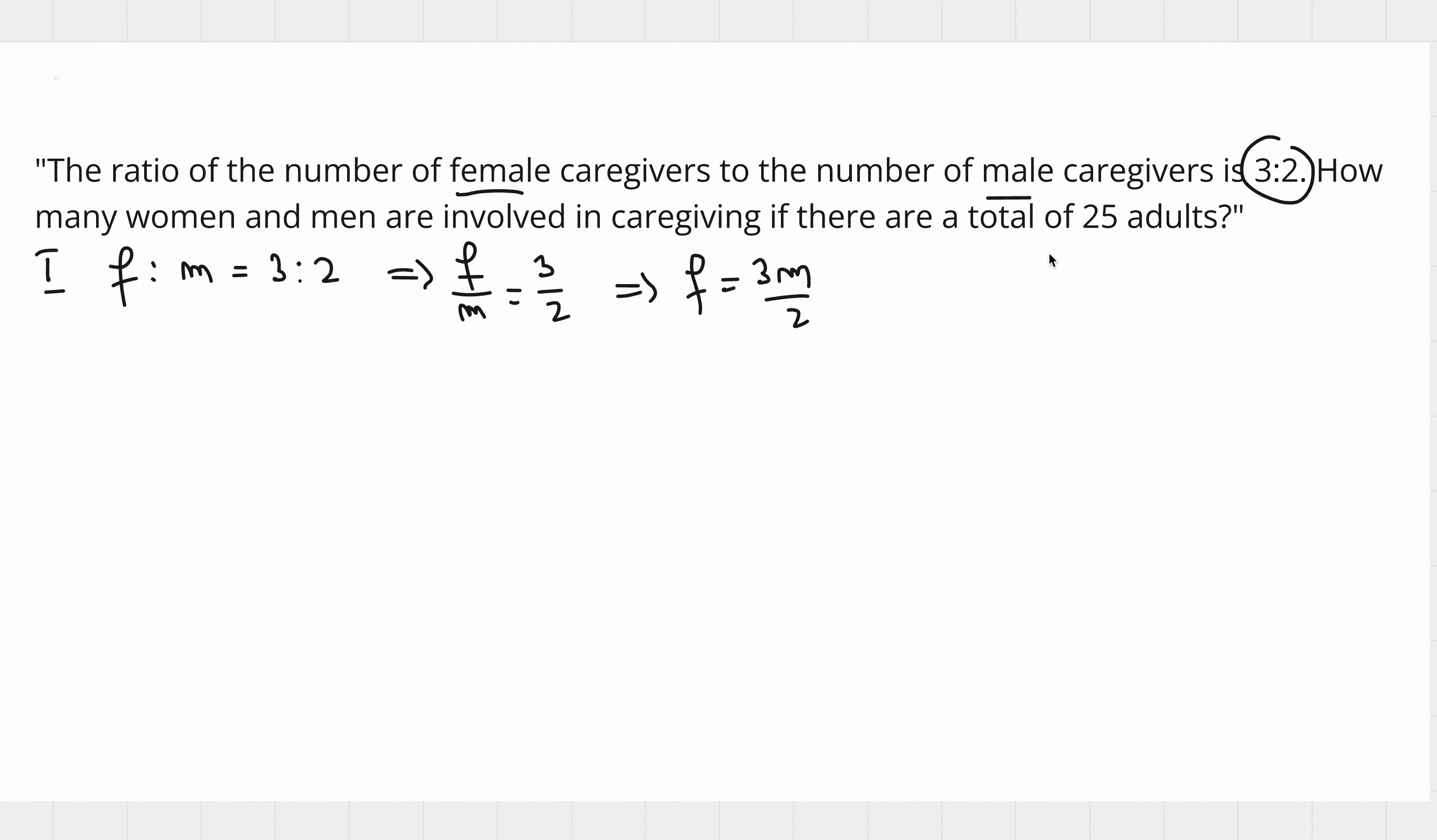Then, because we know the total number of adults is 25, adding all the females plus all the males equals 25. That means if we replace the females with 3M/2 plus M = 25, we will have the same denominator, and that means 5M = 50. The number of males is 50 divided by 5, which is 10.